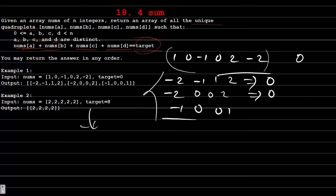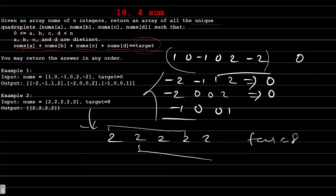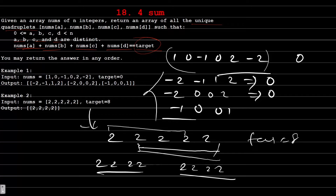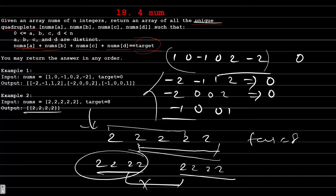Moving to test case 2. We have given an array [2, 2, 2, 2, 2, 2, 2] and target equal to 8. We can see there can be two quadruplets with distinct indexes — [2, 2, 2, 2] and [2, 2, 2, 2] — but these two are the same quadruplets. Since our quadruplets should be unique, we can return only one. So our output will be only one: [2, 2, 2, 2].